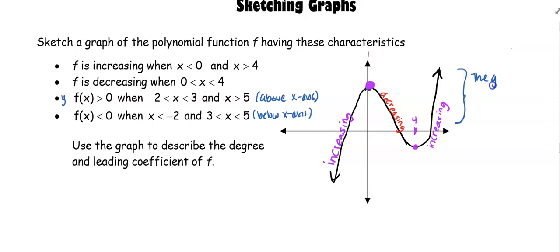The next part, remember that this right here is the graph is above the x-axis, so that's when f of x is greater than 0. It says it's going to be above the x-axis from negative 2 to positive 3.